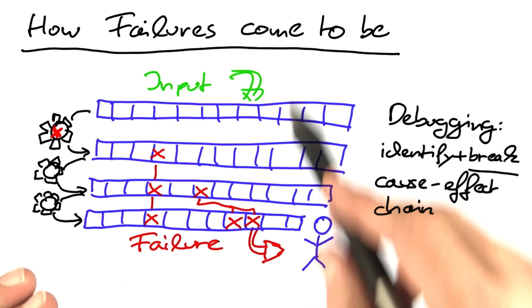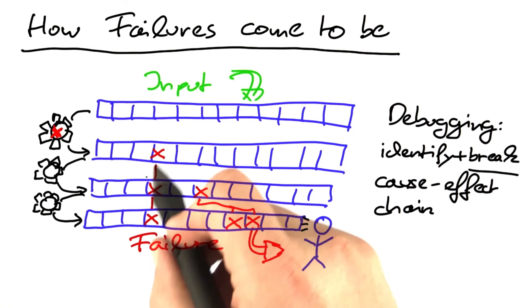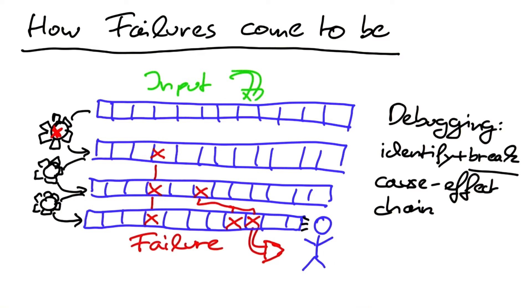You can execute a program again and again, never have a failure, and still have a defect in there. However, if a program fails, that is, if we actually see a failure, then we can always trace it back to the defect that causes it. So if there's a failure, we can always fix it by following back the cause-effect chain.